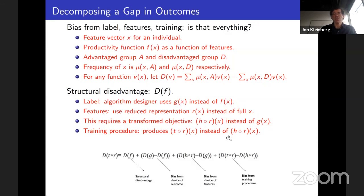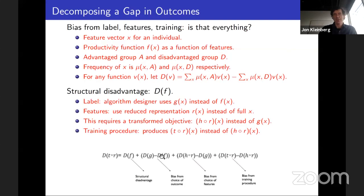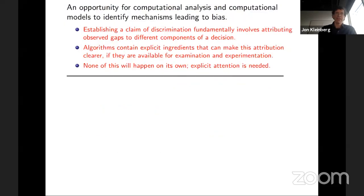When we have algorithms, there's an opportunity for computational analysis and computational models to identify the different mechanisms leading to bias. Establishing a claim of discrimination fundamentally involves attributing the observed gap to different components of the decision — traditionally extremely hard for humans, whose objective functions, what they attended to, and the heuristics they used are inaccessible. With algorithms, in principle we can access these things and ask where the disparity is largest. But this is not automatic — it requires actually collecting the information and examining it.